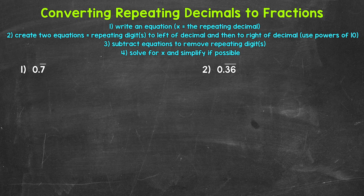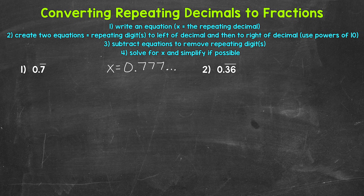Our first step is going to be to write an equation: x equals the repeating decimal. So for step one, x equals 0.777, and this continues on forever. Now let's move on to step two, which we work off that original equation from step one. We need to create two equations — one with the repeating digit just to the left of the decimal, and another with the repeating digit just to the right of the decimal.